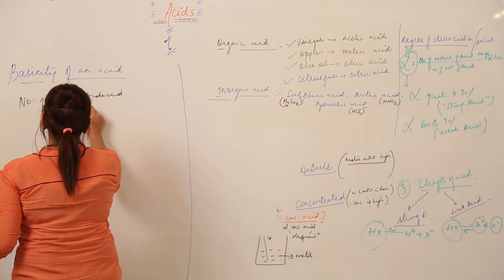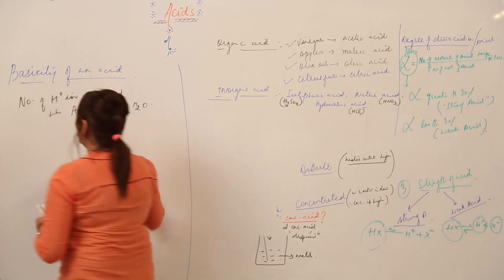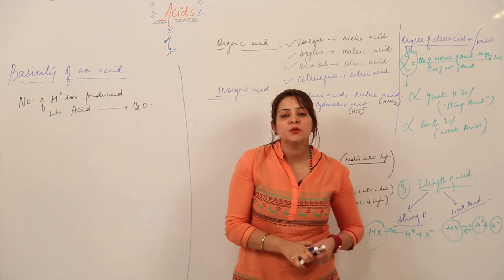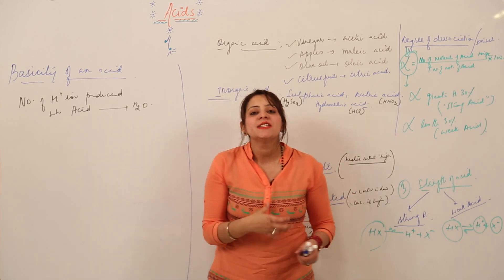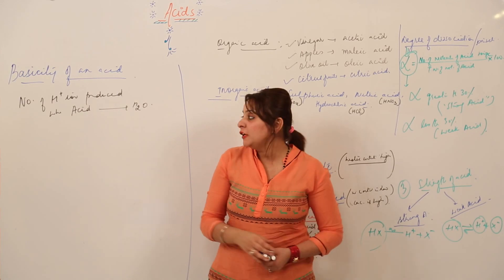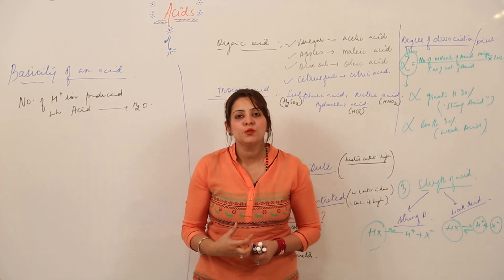The number of H ions which we get when we dissolve acid into water indicates the basicity. So depending upon the number of H ions which an acid gives when it is dissolved in water, we have different types of acids.